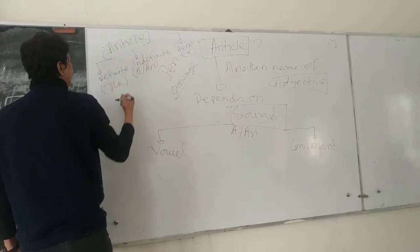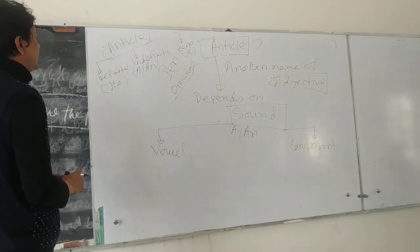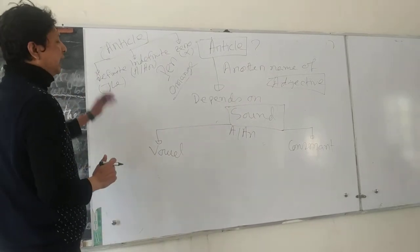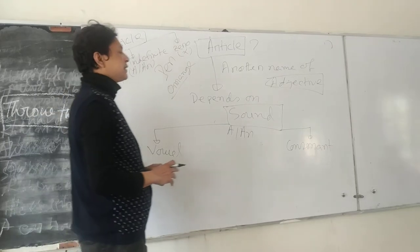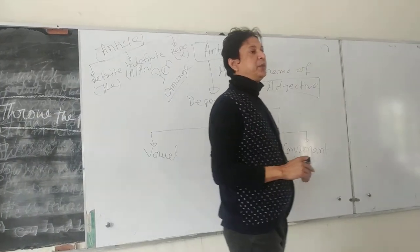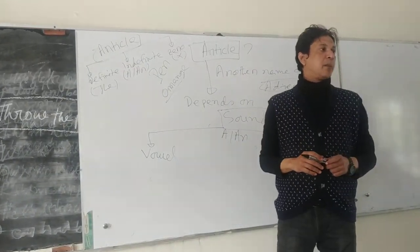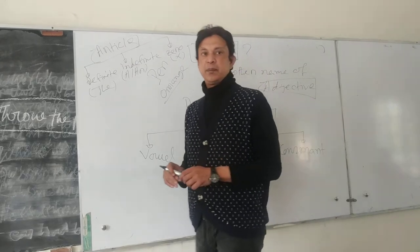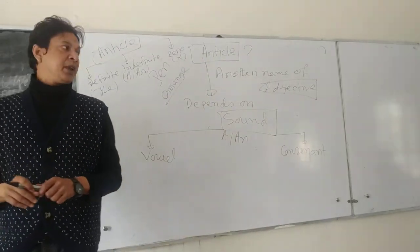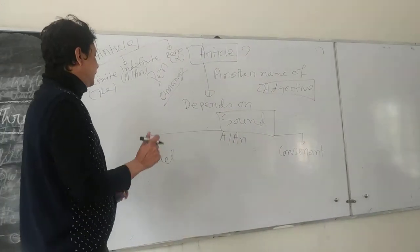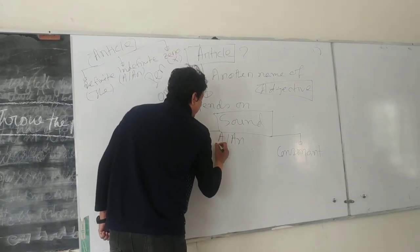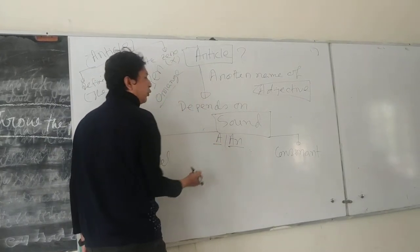Definite is called 'the'. Now we have the positive degree. The positive degree will be A-N, and the corresponding will be the superlative. The indefinite article is A-N.